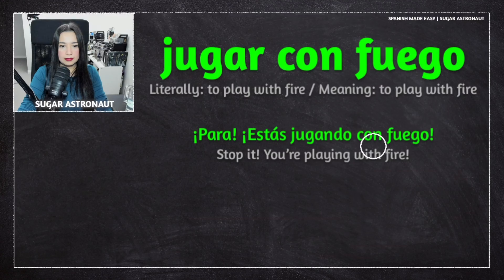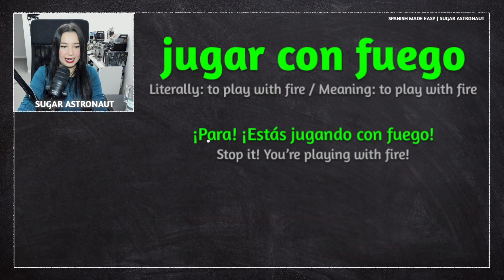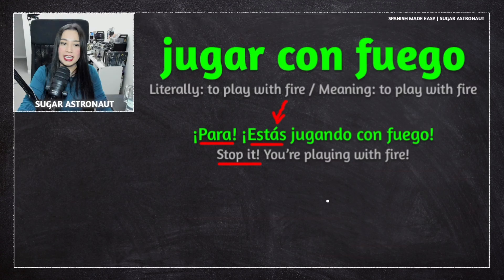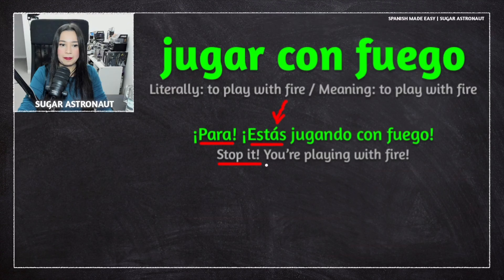So let's break this down. It's very easy, not complicated at all. Para means stop it. Estás — with an accent mark, because there's one without an accent mark that means 'these,' as in estás naranjas, these oranges. But with the accent mark, tú estás means you are. You don't even need tú — you can just say estás.